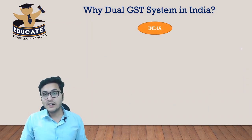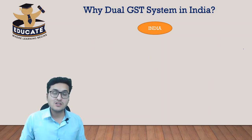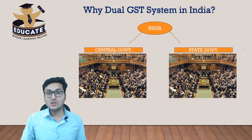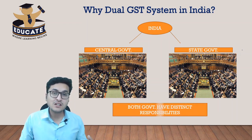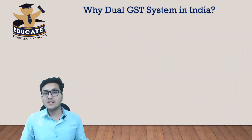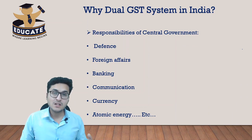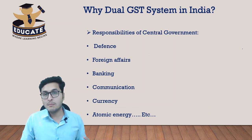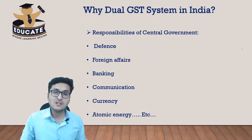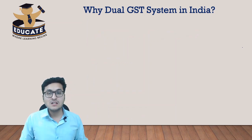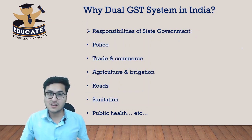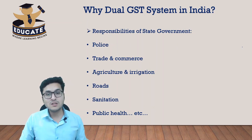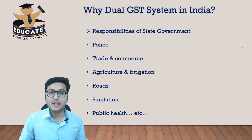India is a country with a federal structure wherein both the central government and state government have distinct responsibilities. The central government has responsibilities such as defense, foreign affairs, banking, communication, currency, etc. The state government has responsibilities such as police, trade and commerce, roads, sanitation, and public health.